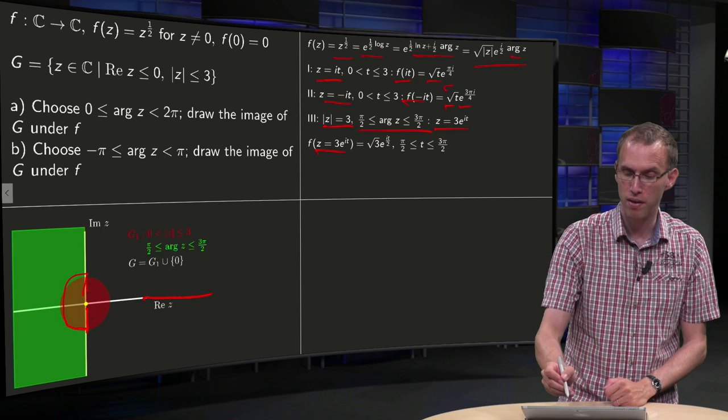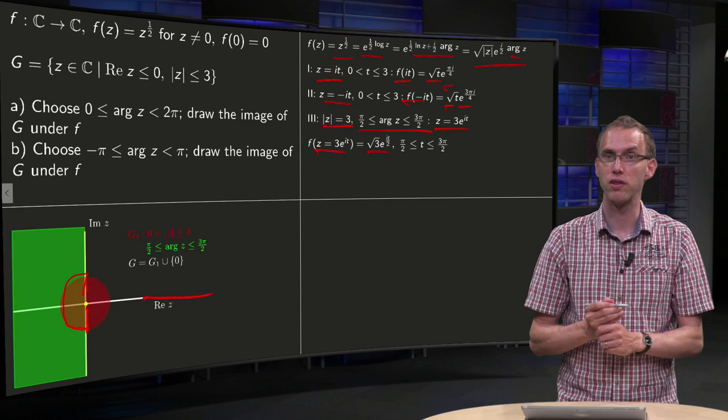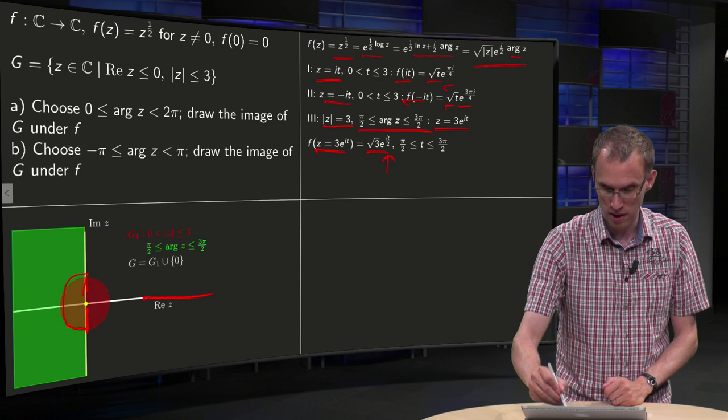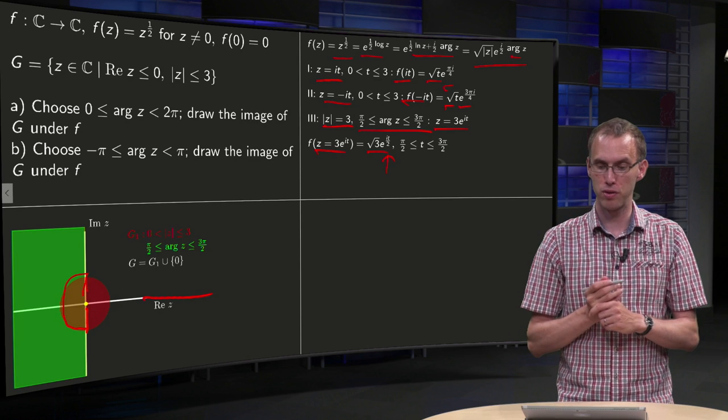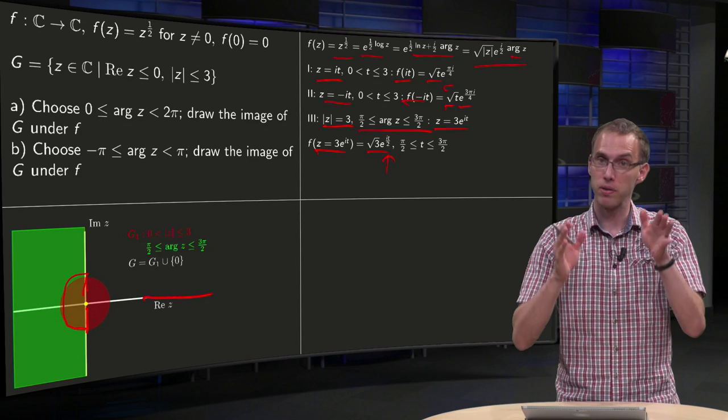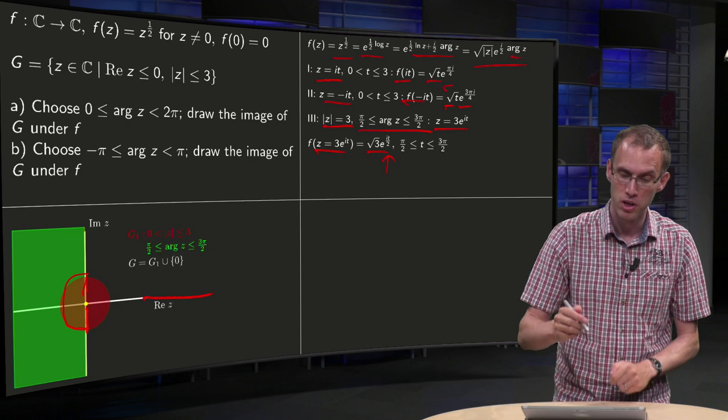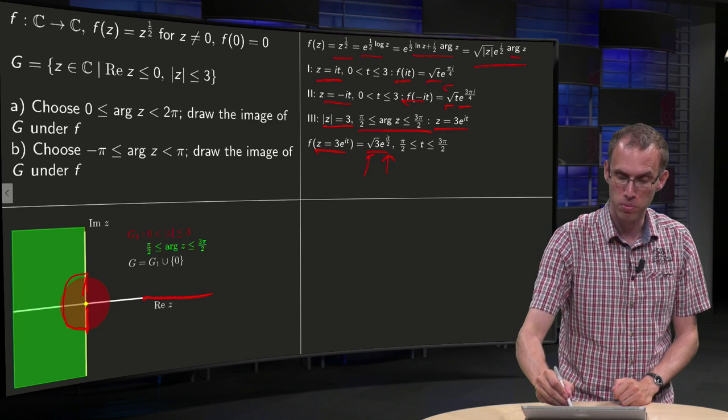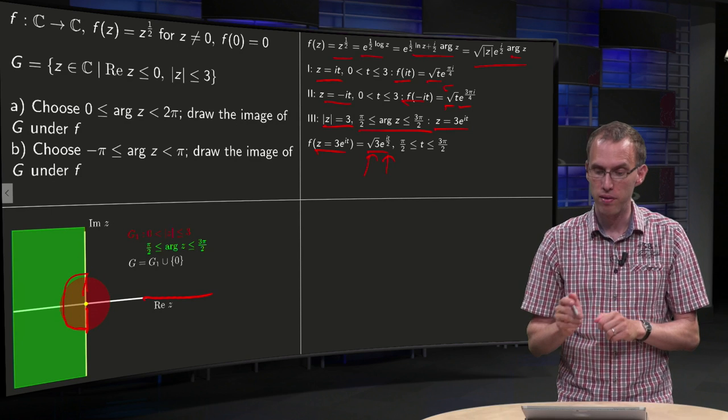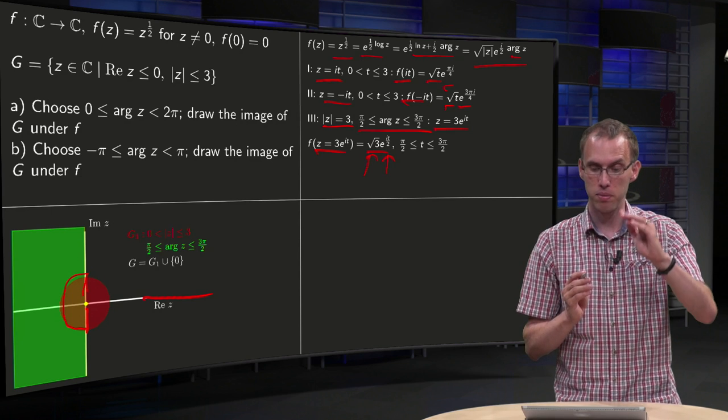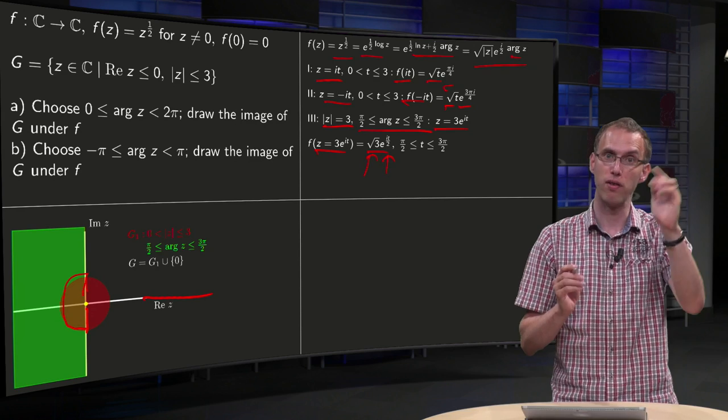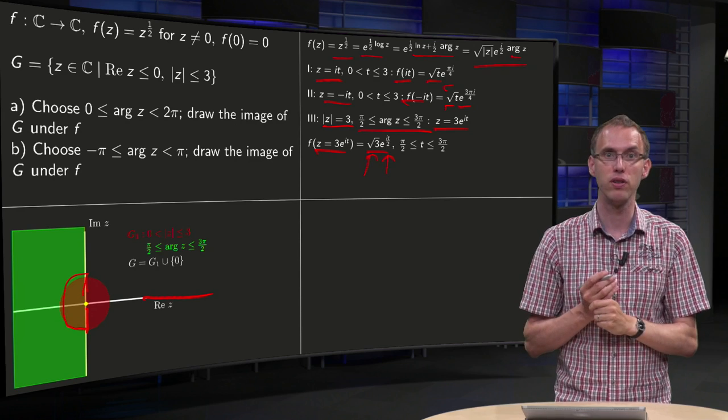If you plug this into f, you get f equals square root of 3 times e to the power of i t over 2, t between pi over 2 and 3 pi over 2. So we have a constant modulus square root of 3, and we have the arguments varying between pi over 4 and 3 pi over 4, so we have a segment of a circle.